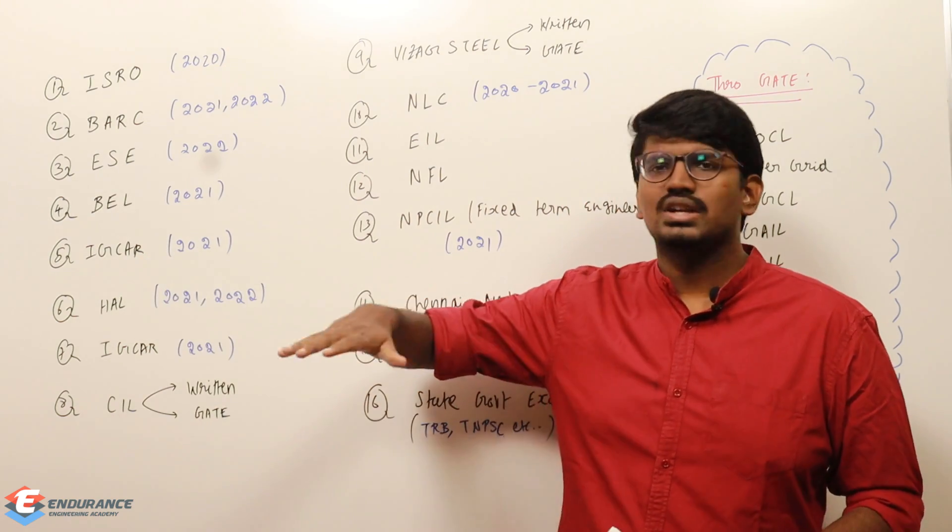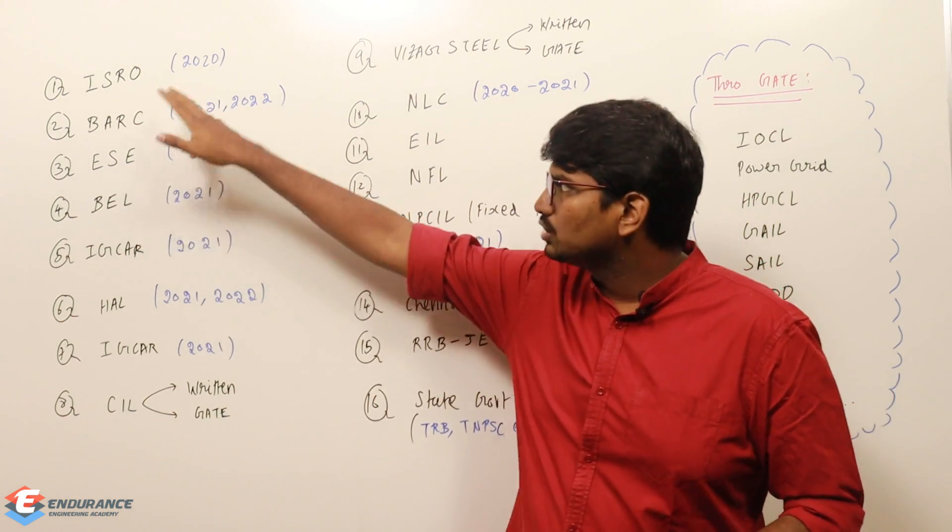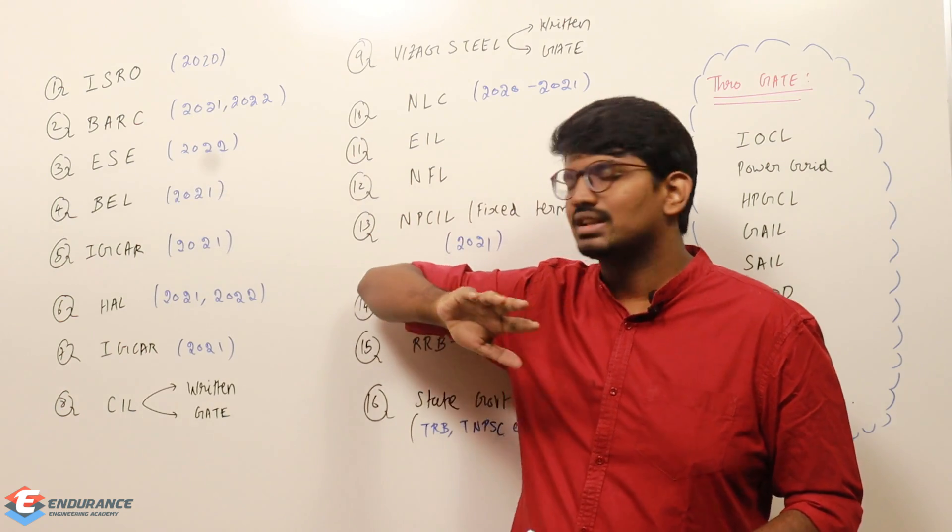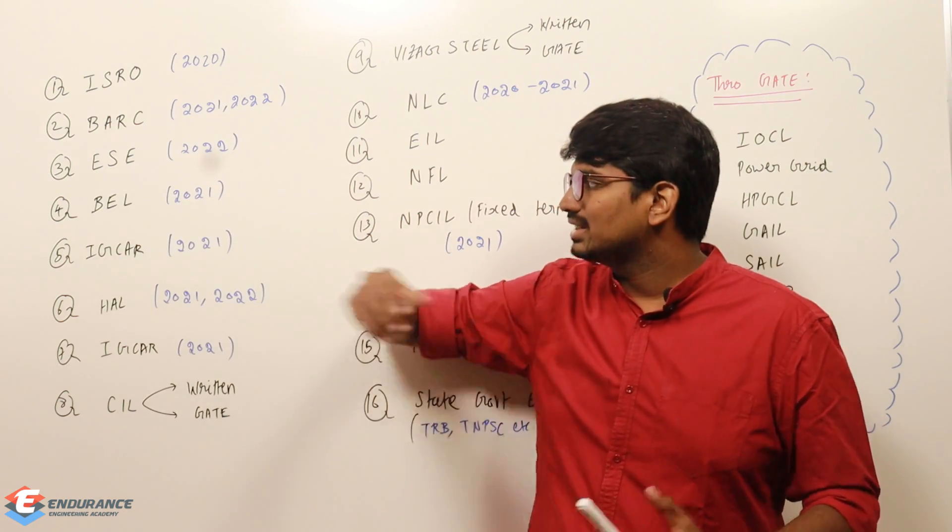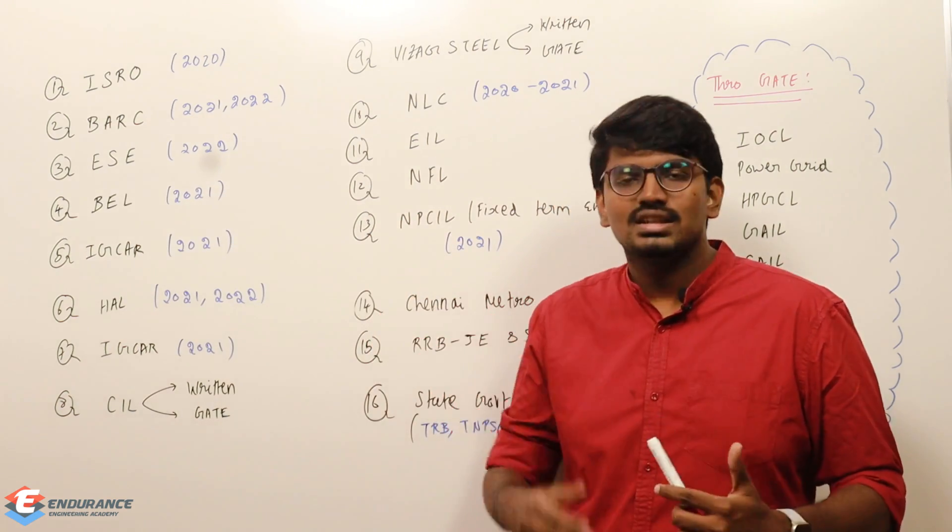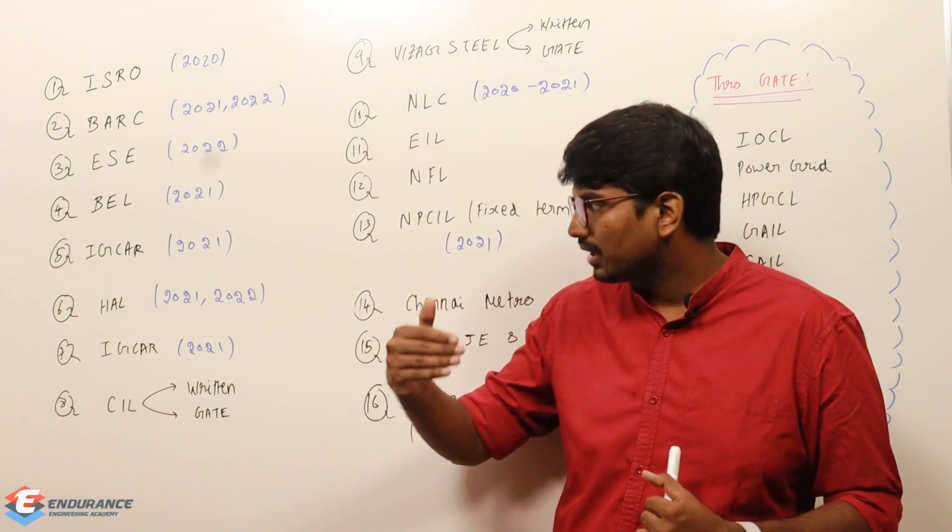Next is IGC, which happened in 2021 in the month of December and November. IGC is something related to scientific officer. ISRO and BARC are related to scientific officer. BEL is assistant or project engineer. IGC is something related to scientific officer.